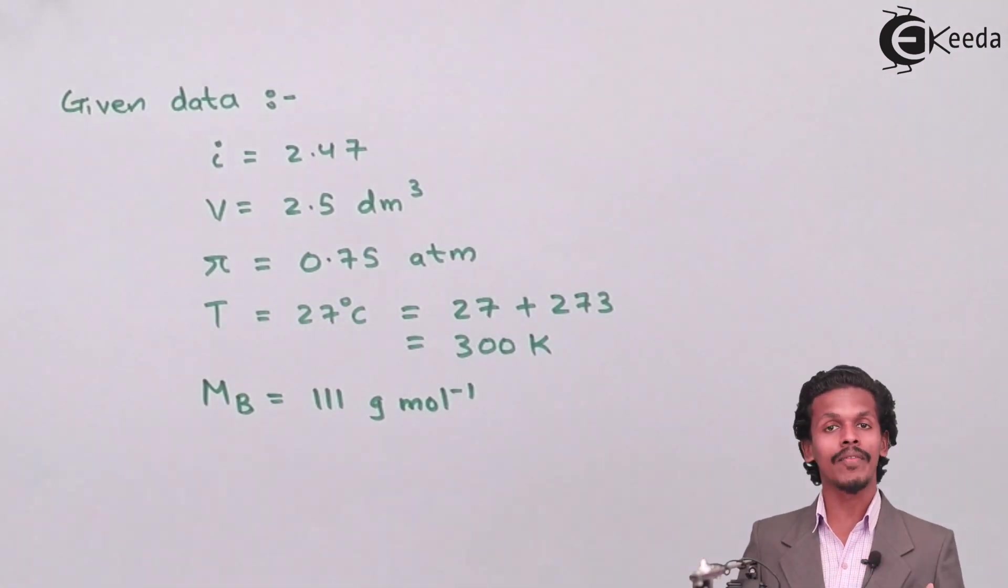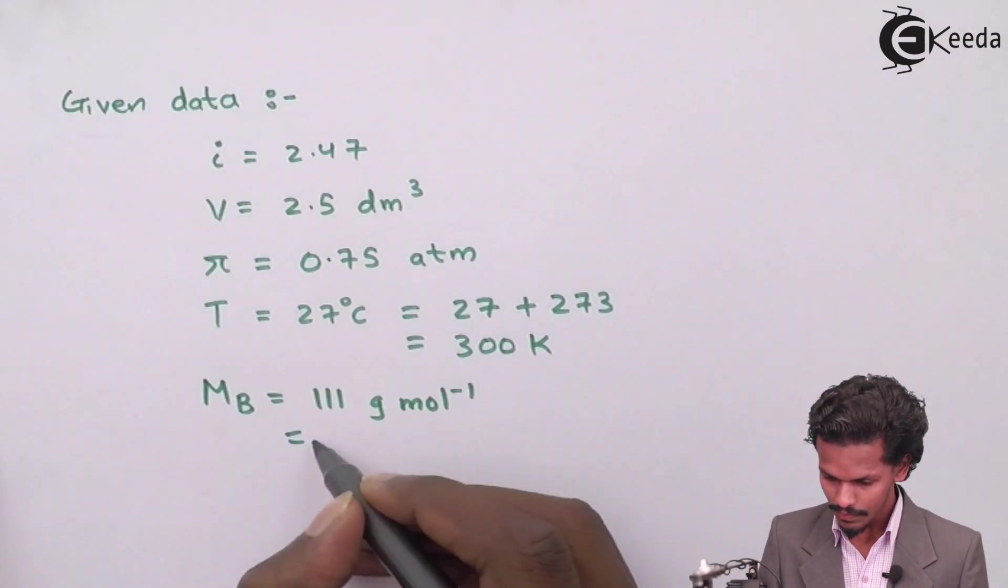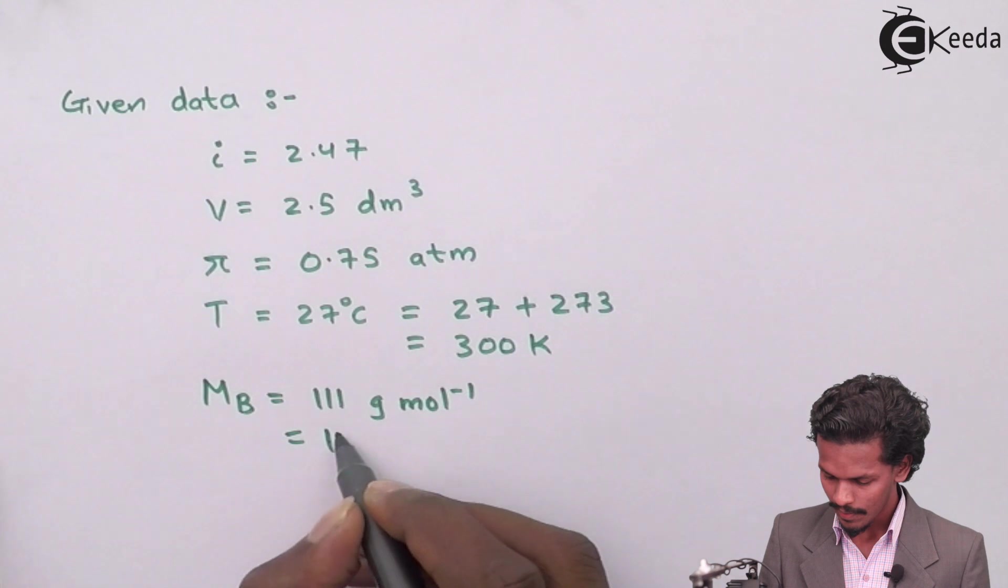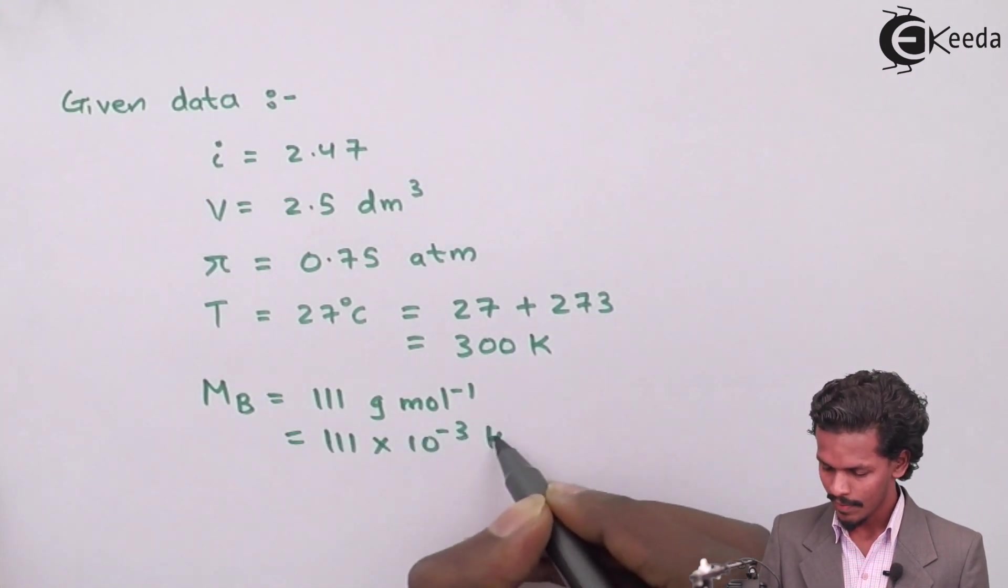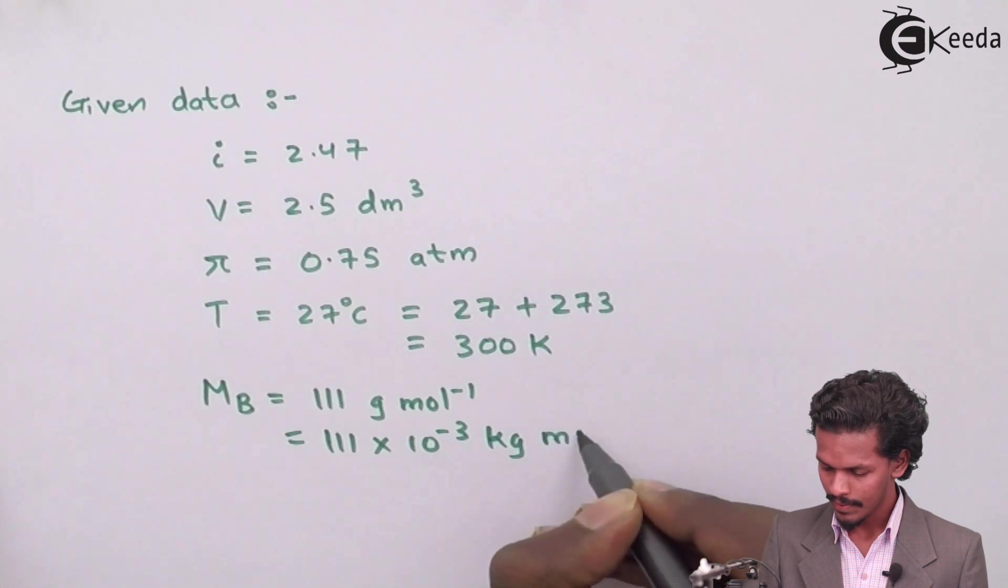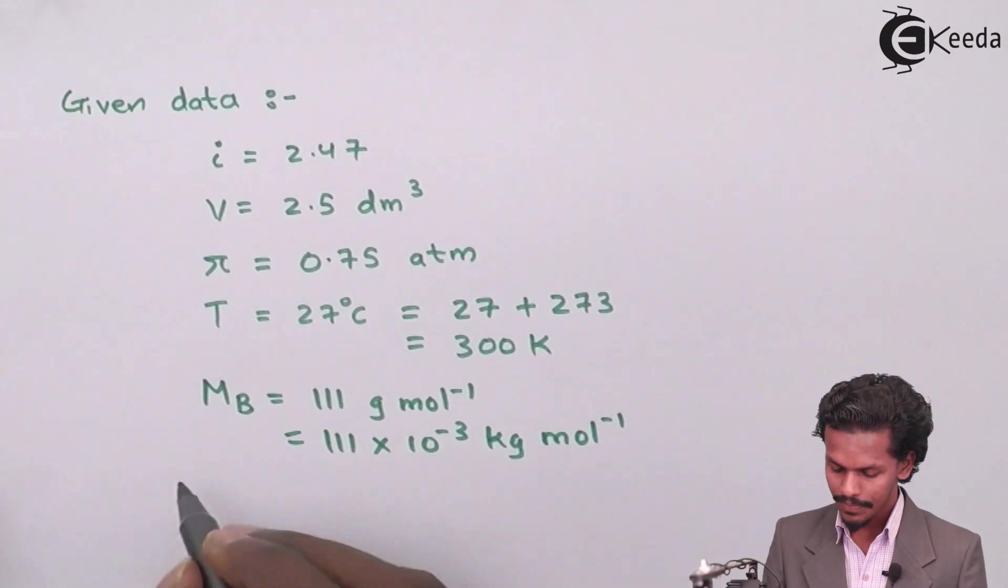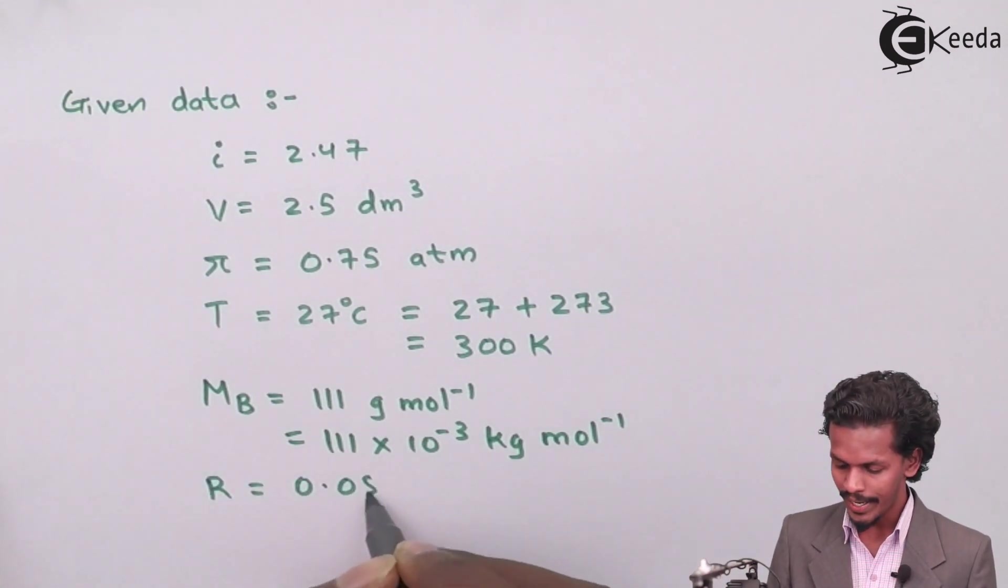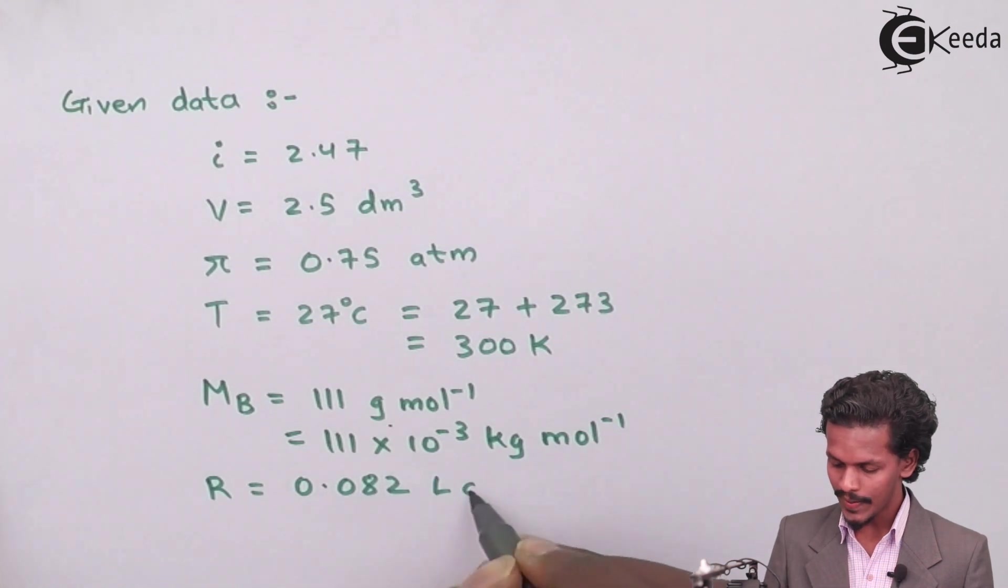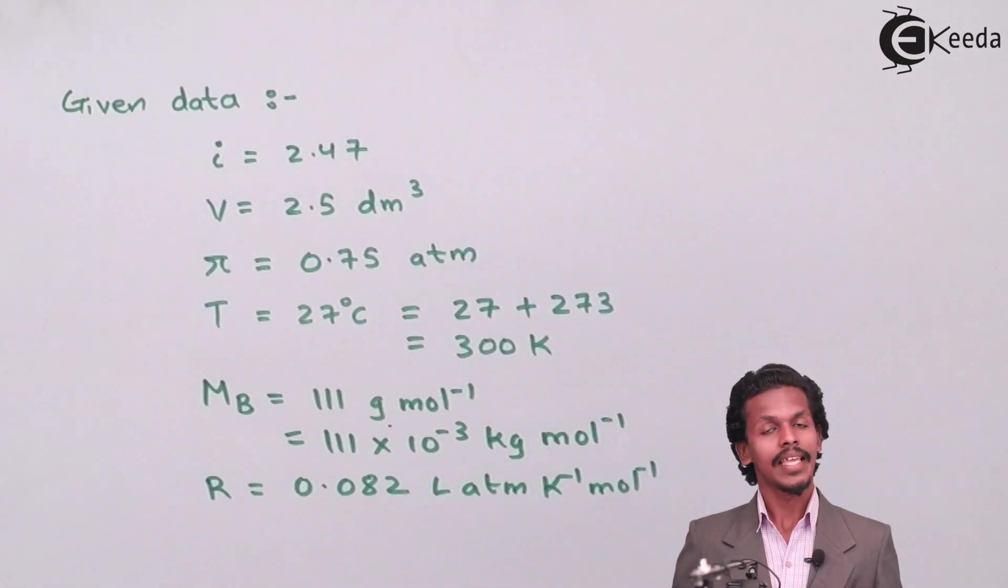which is 111 gram per mole. But for material purposes we will try to convert into kg per mole, which is 111 × 10^-3 kg mol^-1. And at last the gas constant is also given which is 0.082 liter atmosphere Kelvin per mole. This is the given data.